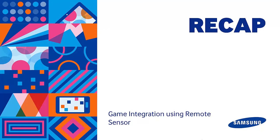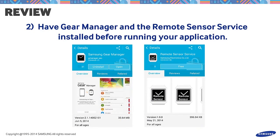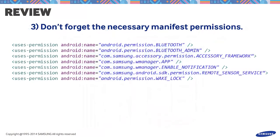Let's sum up the things we discussed in analyzing the application that uses Samsung remote sensor. When creating an application for the remote sensor: first, include the necessary SDK jar files in your project; second, always make sure to have the Gear Manager and the Remote Sensor Service installed before running your application; third, don't forget the necessary manifest permissions. We hope this tutorial helped. For inquiries, please post your questions on the official forum at developer.samsung.com.